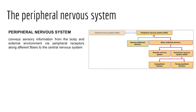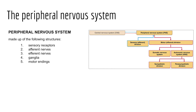To begin today's lecture, let's ask: what is the peripheral nervous system? The PNS includes all neural structures found outside the brain and spinal cord. It conveys sensory information from the body and external environment via peripheral receptors along afferent fibers to the CNS, and it sends commands out to effectors via efferent fibers to skeletal muscles. The PNS is composed of five structures: sensory receptors, afferent nerves, efferent nerves, ganglia, and motor endings.